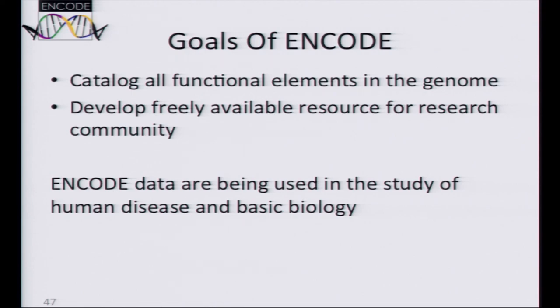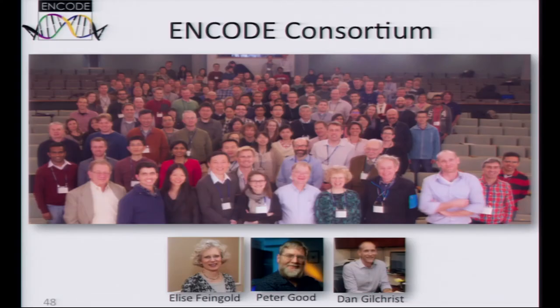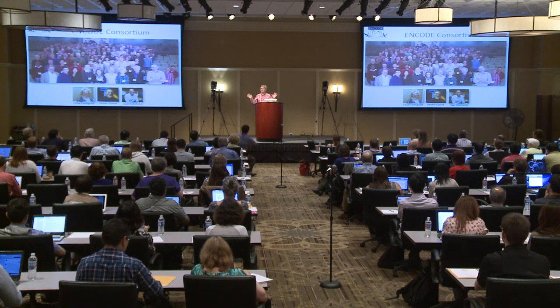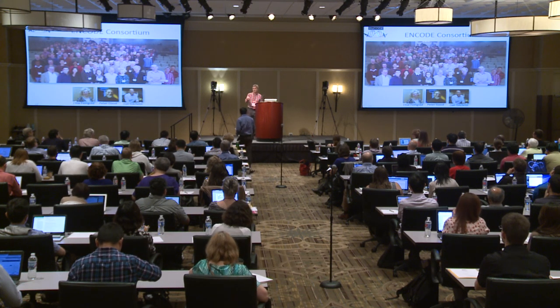In summary, the two main goals of ENCODE are to create this resource of candidate functional elements, and then to share this resource with the biomedical community. We think the data are very useful for the study of basic biology and disease, as evidenced by the large number of publications using ENCODE data. I'd like to thank my colleagues in the consortium, and my colleagues at NHGRI: Elise Feingold, the scientific manager of the project, Dan Gilchrist, who's also here today, and Peter Good, a long-term member of the project. I'll be around for the whole meeting if people have other questions.